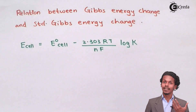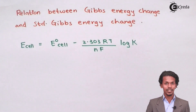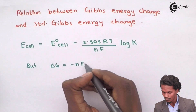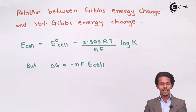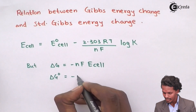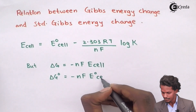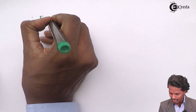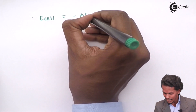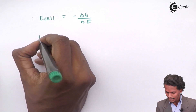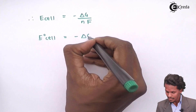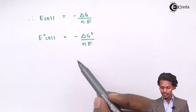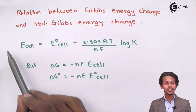According to the Gibbs free energy change relation with cell potential from the last lecture, delta G is equal to minus NF times E cell. Similarly, delta G naught equals minus NF times E naught cell. Therefore, E cell equals minus delta G divided by NF, and E naught cell equals minus delta G naught divided by NF. These two are the values of E cell and E naught cell that we are going to substitute into the Nernst equation.